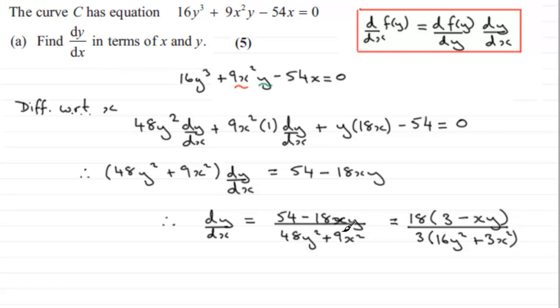And you can see that we can cancel now the common factor of 3. So what we end up with is essentially 6 multiplied by 3 minus xy, all divided by 16y² + 3x².